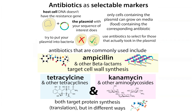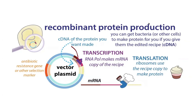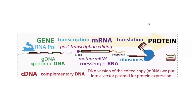We give our bacteria a leg up, because in the presence of the antibiotic, the other bacteria aren't going to be able to survive, but they will — even though they're a little weaker because they're going to be doing our bidding. We stick the instructions for making our protein — going back to molecular dogma — we've got the DNA gene that gets transcribed into RNA, and then the RNA gets used by the ribosomes to make a protein.